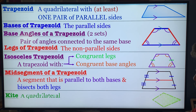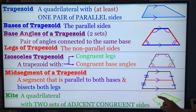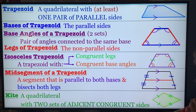A kite is a quadrilateral where two sets of adjacent sides are congruent — adjacent meaning next to each other. A kite also has one pair of opposite angles that are congruent, which we'll get into later. A kite is also commonly called a diamond.